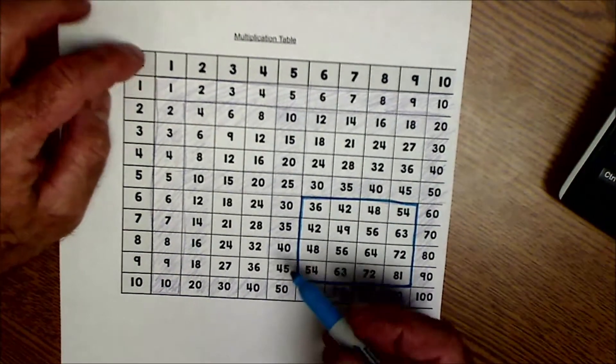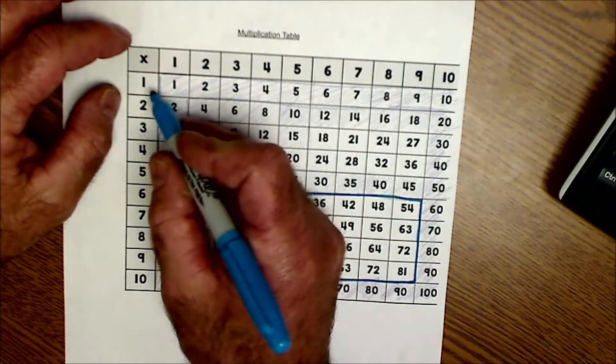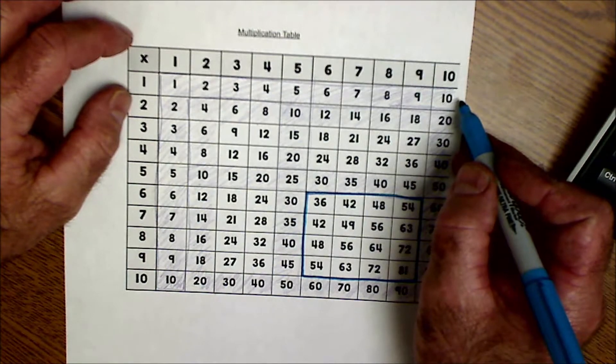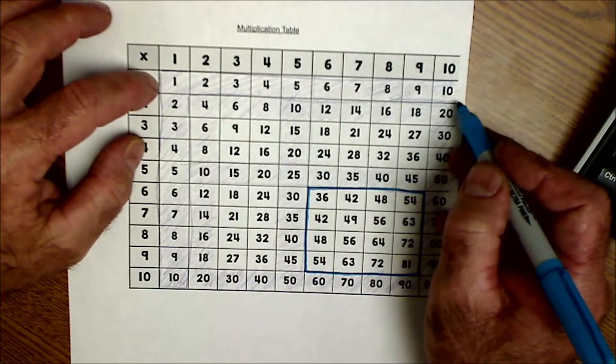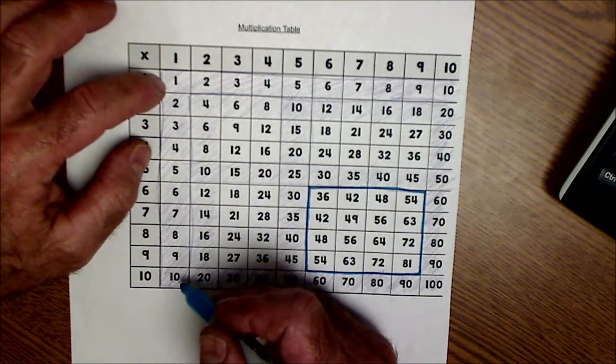So to start with, 1 times anything is itself. So you got this column figured out. So now all of a sudden from a hundred multiplication facts you've already knocked out 19 of them. So you're going down quickly.